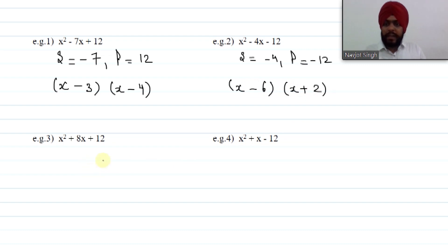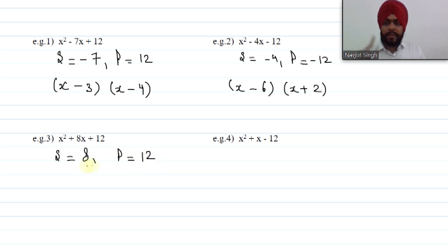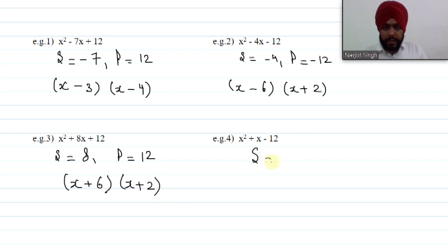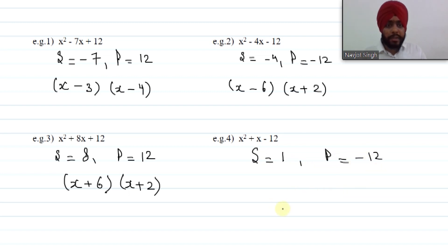Then x² + 8x + 12: sum is positive, product is positive, so both factors are positive. Product is 12, sum is 8 — factors are 6 and 2. So x² + 8x + 12 = (x + 6)(x + 2). And finally, sum positive that is 1, product negative that is −12 — one factor negative, one positive; the positive number is bigger. So directly (x + 4)(x − 3).